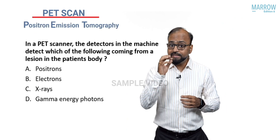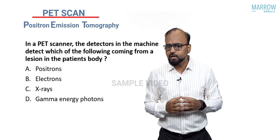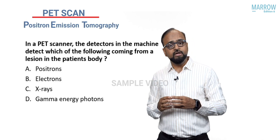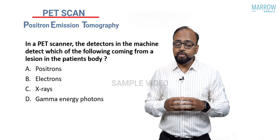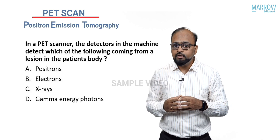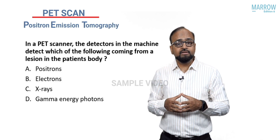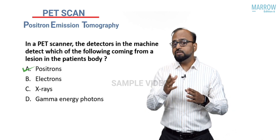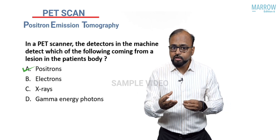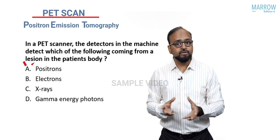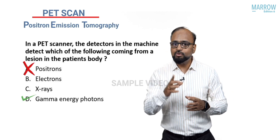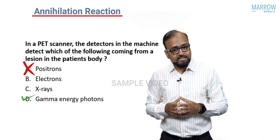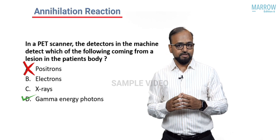In a PET scanner, the detectors within the machine detect which of the following coming from the lesion? PET stands for Positron Emission Tomography, so positrons are emitted in the body. You might quickly jump to answering 'positrons,' but that is not the correct answer. Positrons are emitted inside the body, but they do not reach the detectors — they do not come out of the body. What comes out is gamma energy photons, through a mechanism called the annihilation reaction.